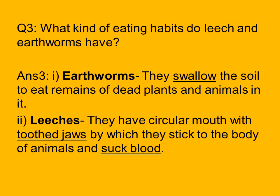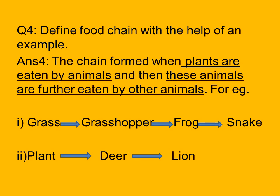The last question is: define food chain with the help of an example. A food chain is the chain formed when plants are eaten by animals and then those animals are further eaten by other animals. Plants are at the lowest level as producers, eaten by herbivore animals, which are then eaten by carnivorous animals.